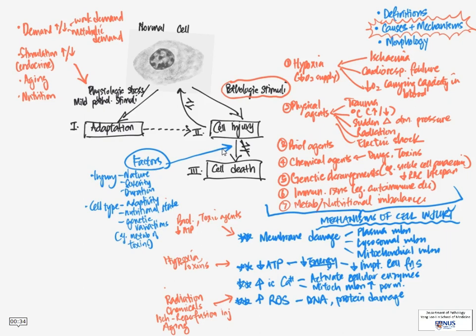And we've also looked at the factors that affect how badly the cell reacts to injury. And the next thing that we're going to look at is some of the morphological features of cell injury as well as cell death.